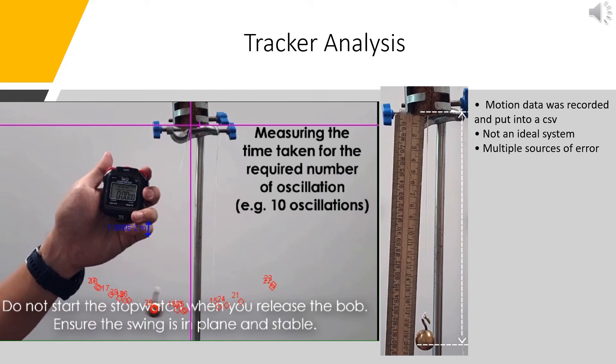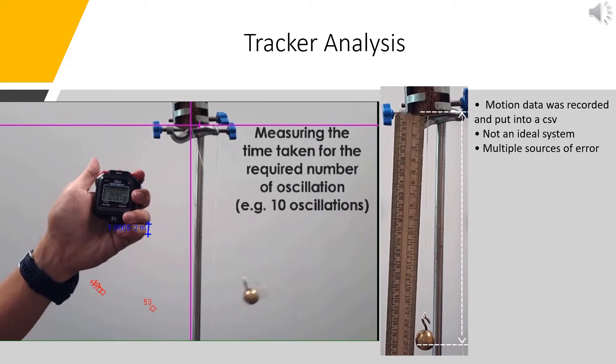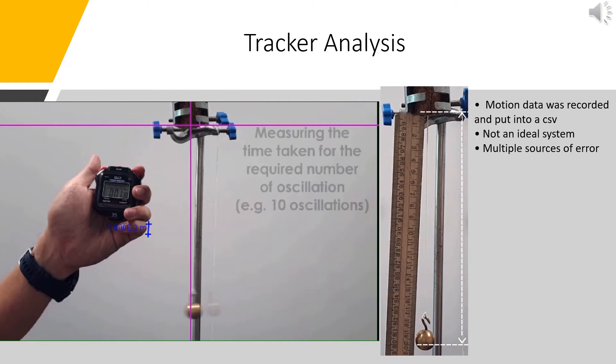I had to search for a video of the pendulum online and then import it into Tracker. After finding a video, I went frame by frame, selecting the center of mass each time. After this, I copied the data into a CSV file so that I could graph the observed and predicted data at the same time.